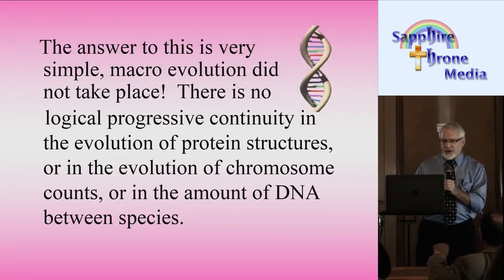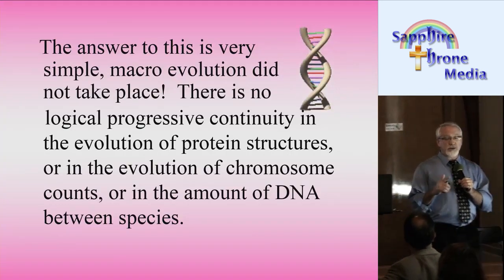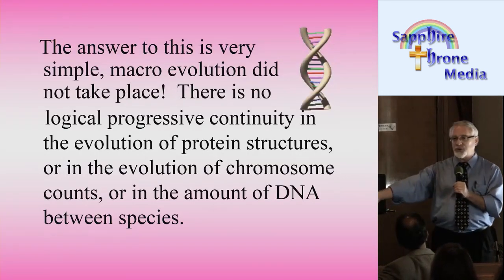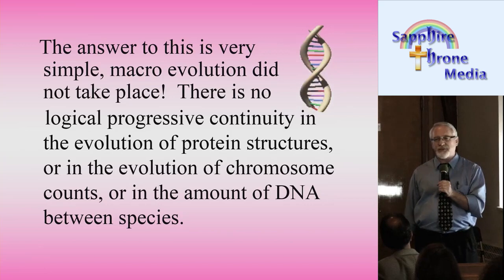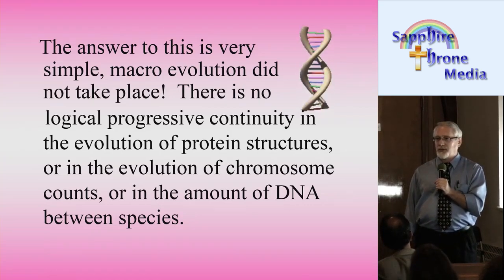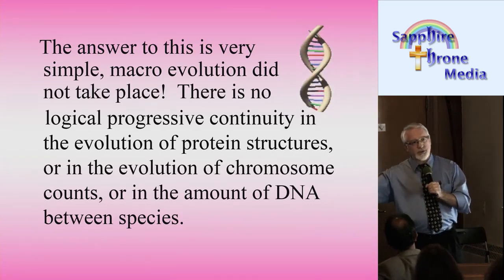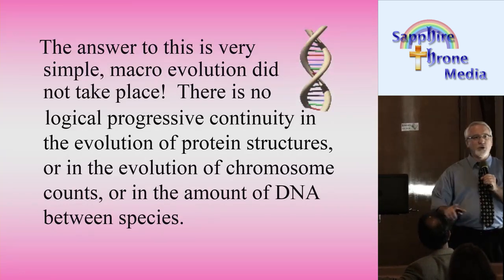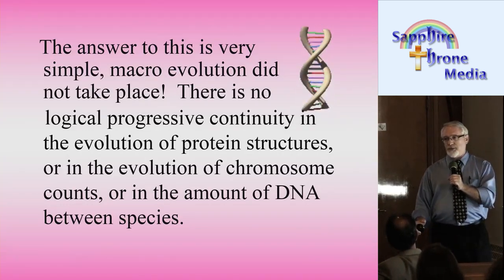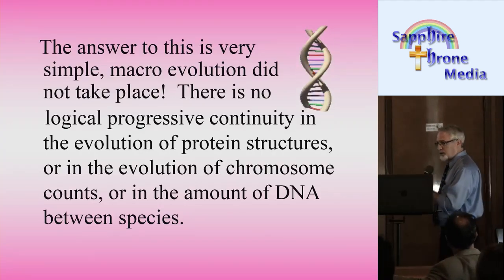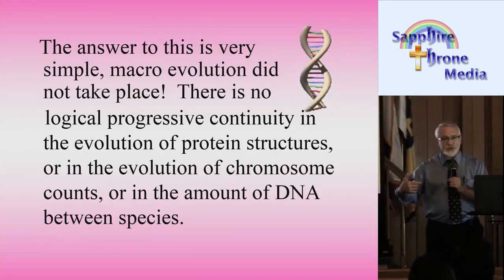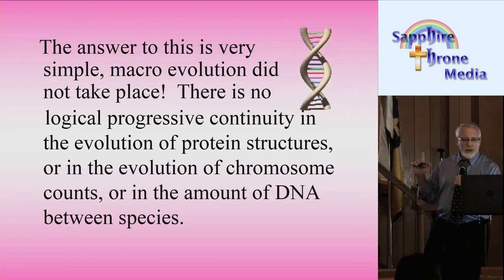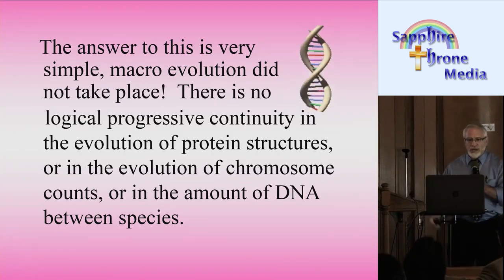Macro evolution, on the other hand, is the theory that one animal evolves into a new kind of species — like a dog turns into a horse. That never happens. There is no transitional life form anywhere that has ever been found in the fossil record to prove that there is a transition such as macro evolution. Macro evolution does not take place.